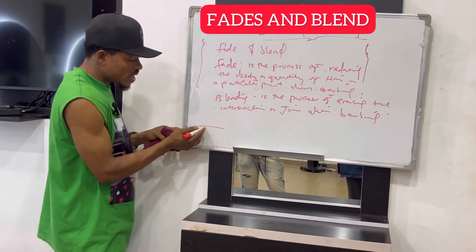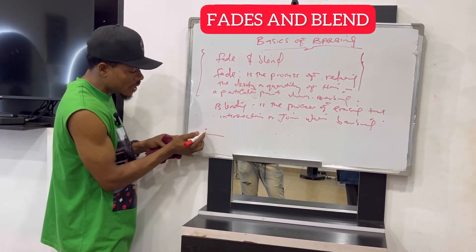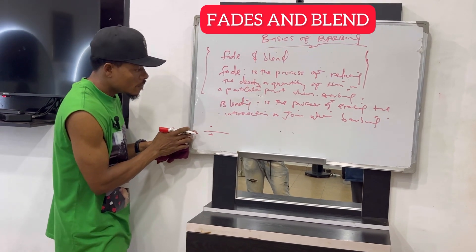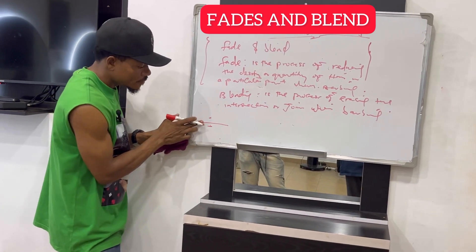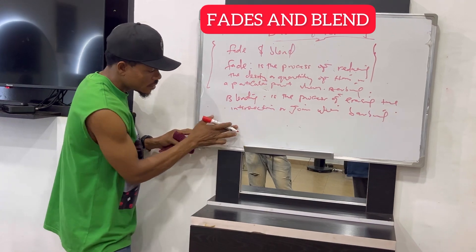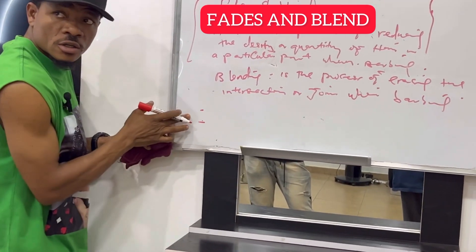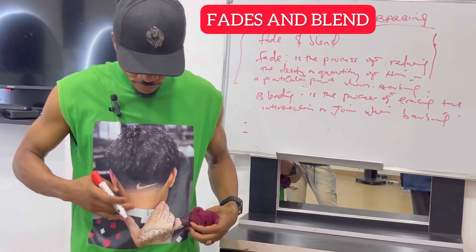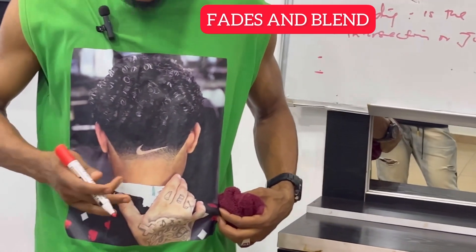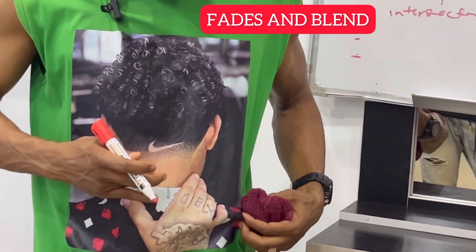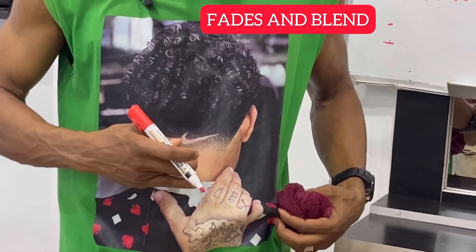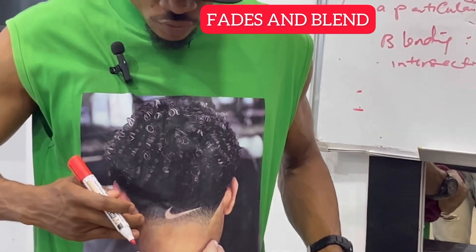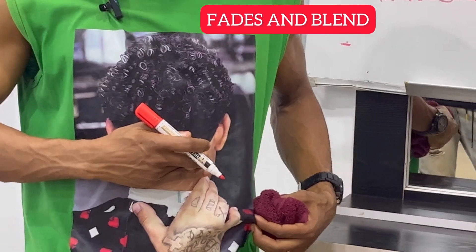Whenever you erase that line that joins a particular level — that joins level one to level two — that is called blending. The join, like this: what joins here to here is called blending.